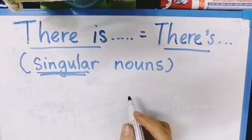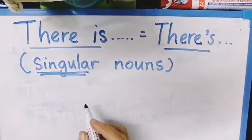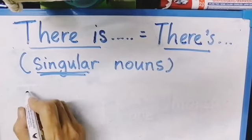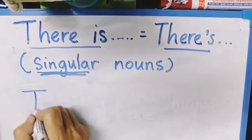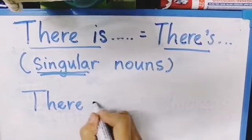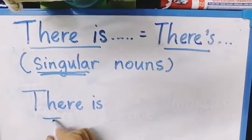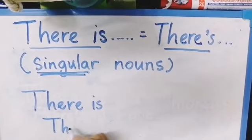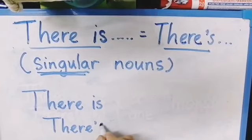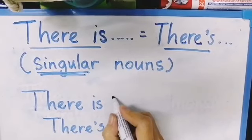An example of a sentence with singular nouns: begin your sentence with 'There is' or 'There's', followed by a singular noun.